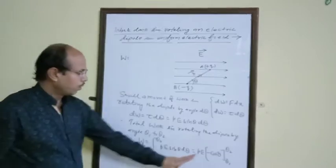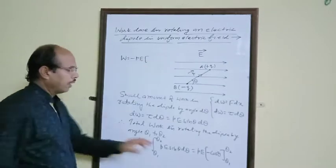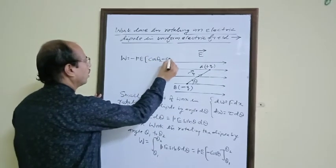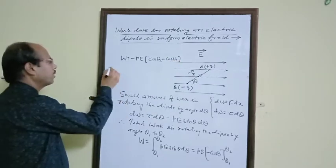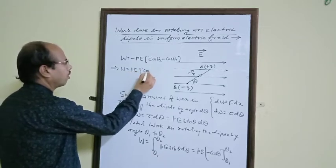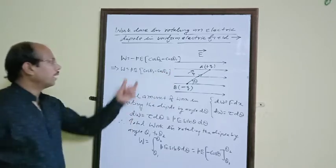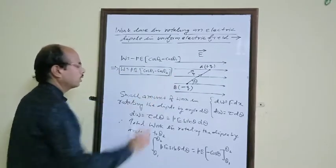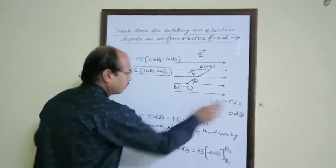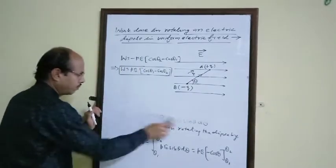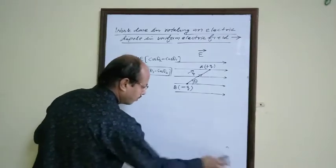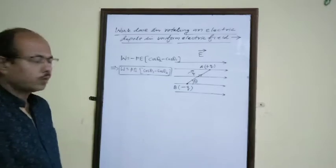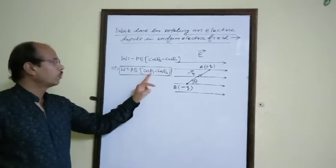Therefore W equals to minus PE times [cos theta₂ minus cos theta₁], which simplifies to W equals to PE (cos theta₁ minus cos theta₂). This is the final expression for work done in rotating the dipole from theta₁ to theta₂.